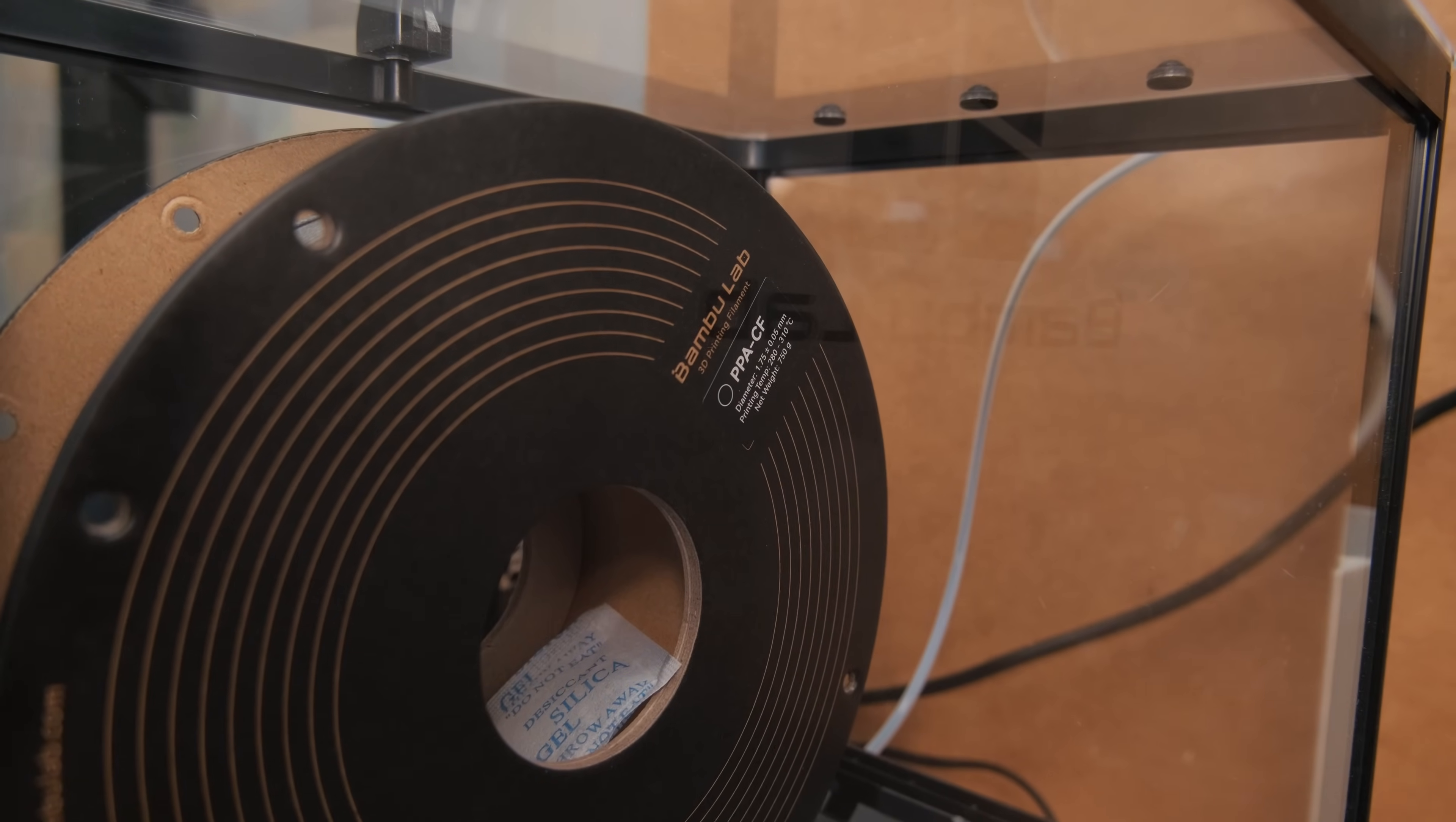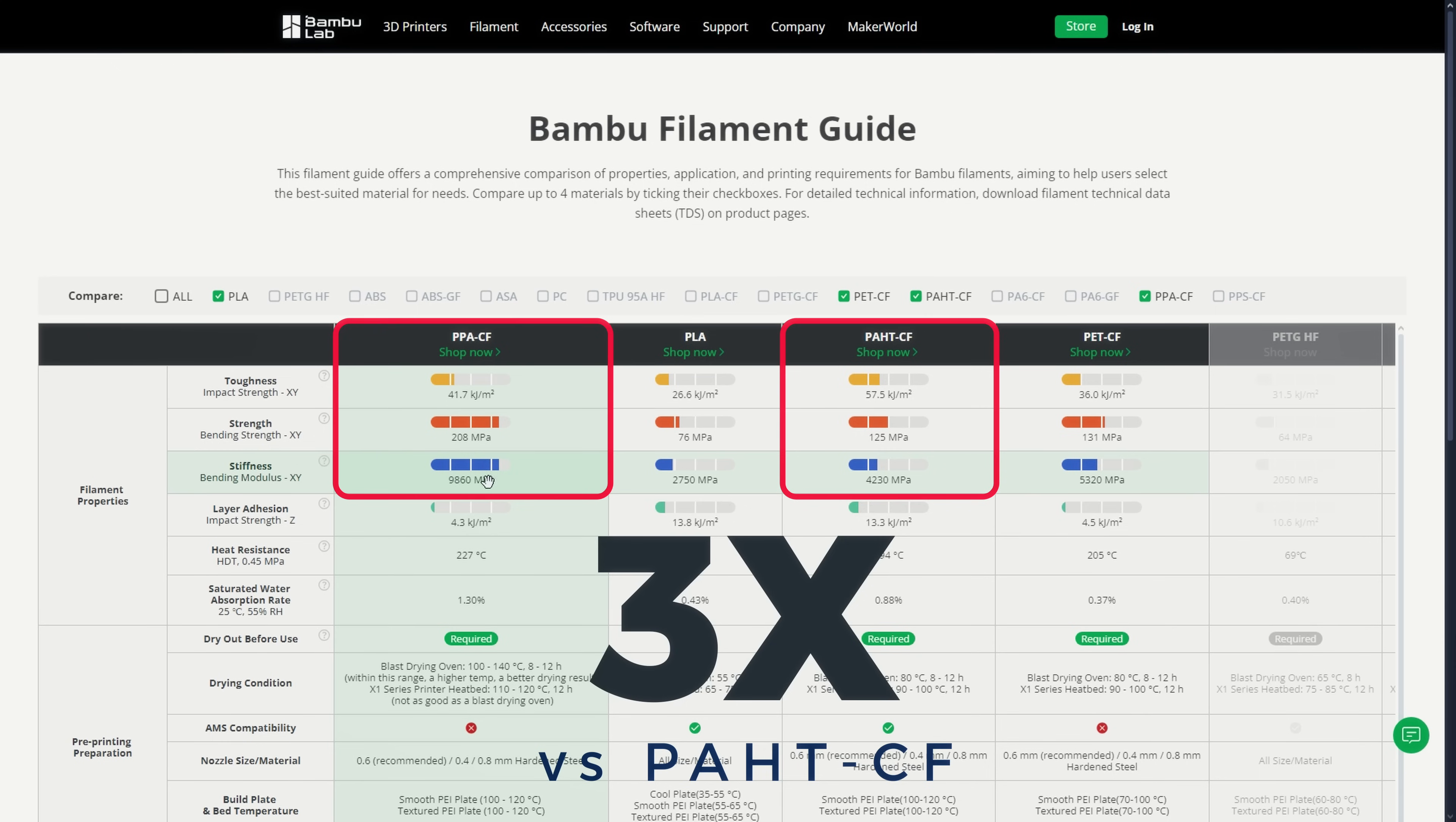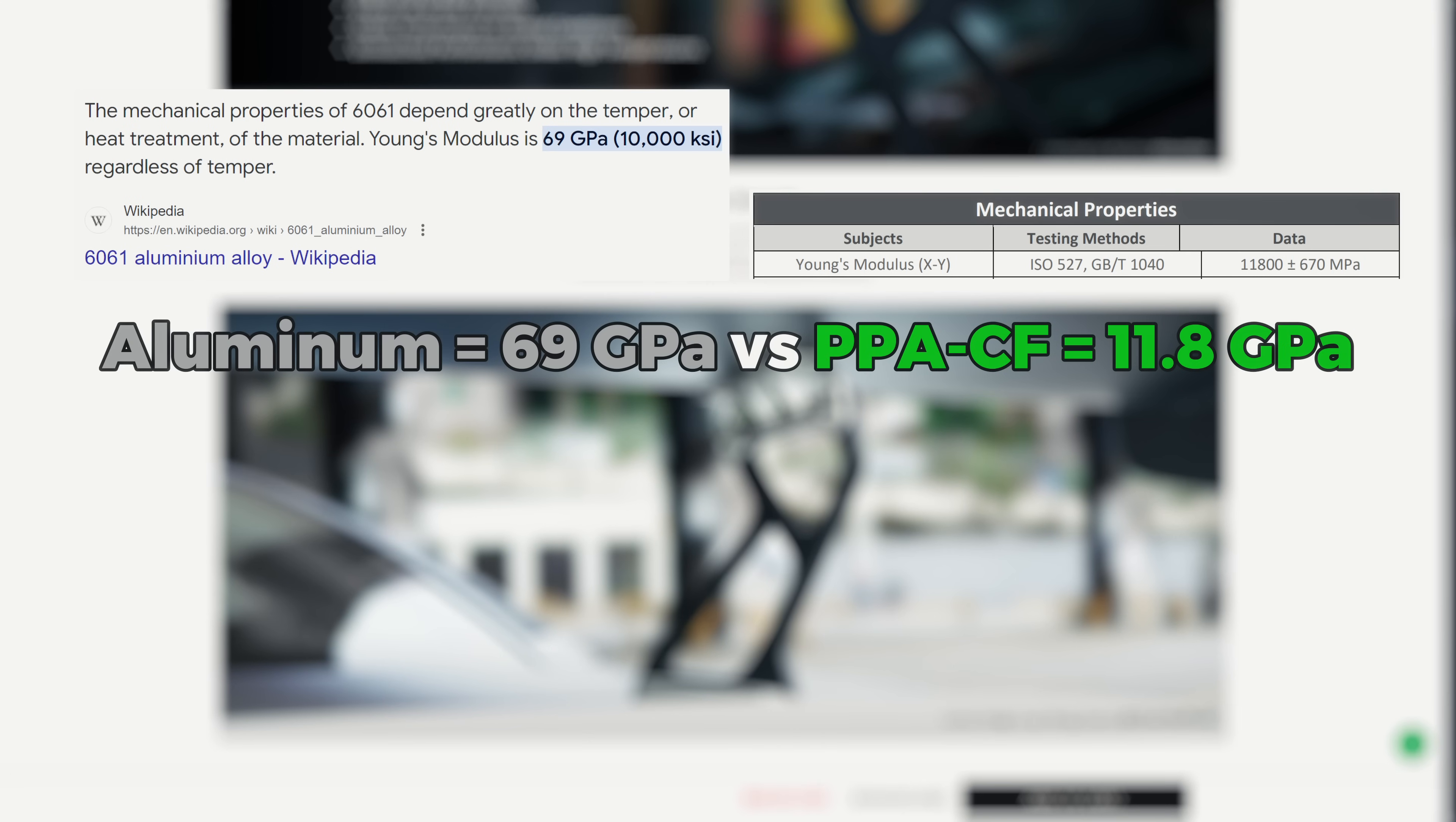Moving forward we have the newly released PPA-CF. This one is something special, not only because one spool costs half of the A1 mini, but also because it has an absolutely insane stiffness. It is around 4 times stiffer than the basic PLA, 3 times than previously tested carbon fiber nylon, and 2.5 times than the PET-CF filament. While these numbers are impressive, I feel like calling it metal-like strength is a little bit much. Because the same part from the most commonly used 6061 aluminum alloy would have a 5 times higher stiffness.